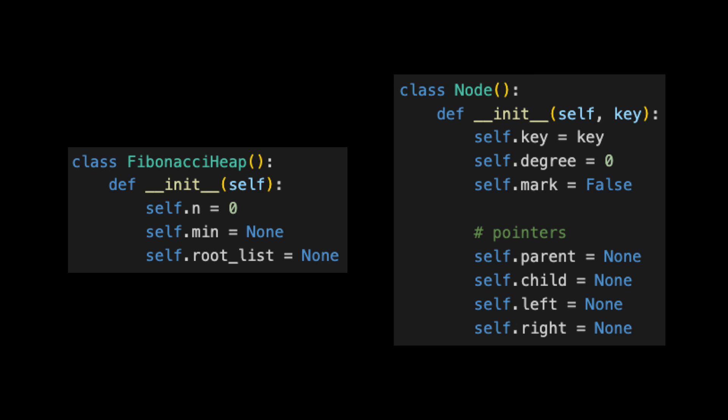Here's what all that looks like in code. On the left, when we initialize a Fibonacci heap, we keep track of the total number of nodes, a pointer to the minimum node, and a pointer to the root list. On the right, for each individual node, we store its key, degree, and mark, and four pointers: one to the parent, child list, and left and right siblings.